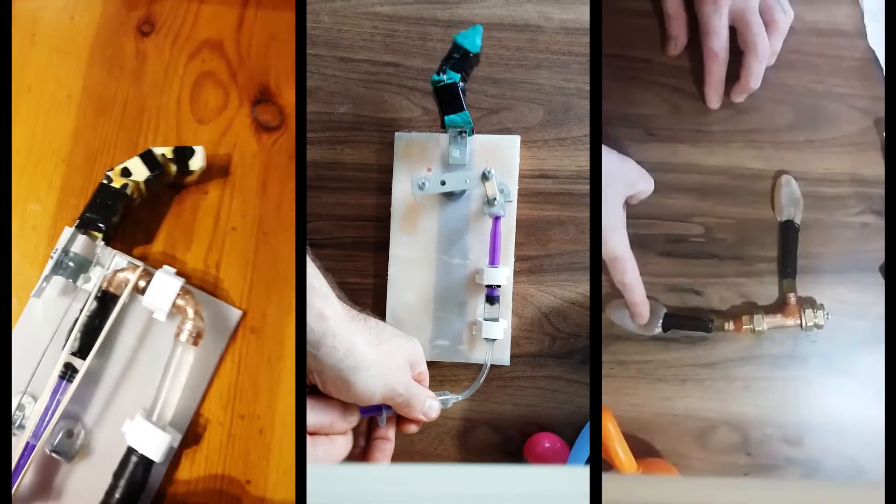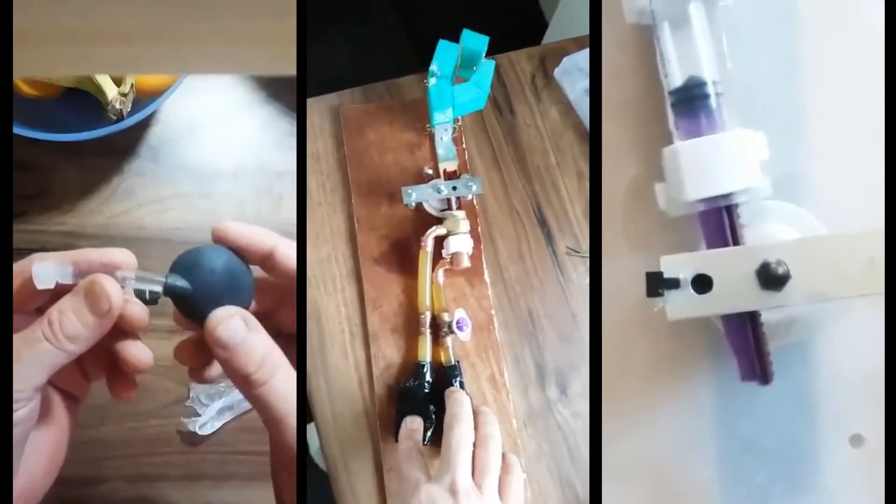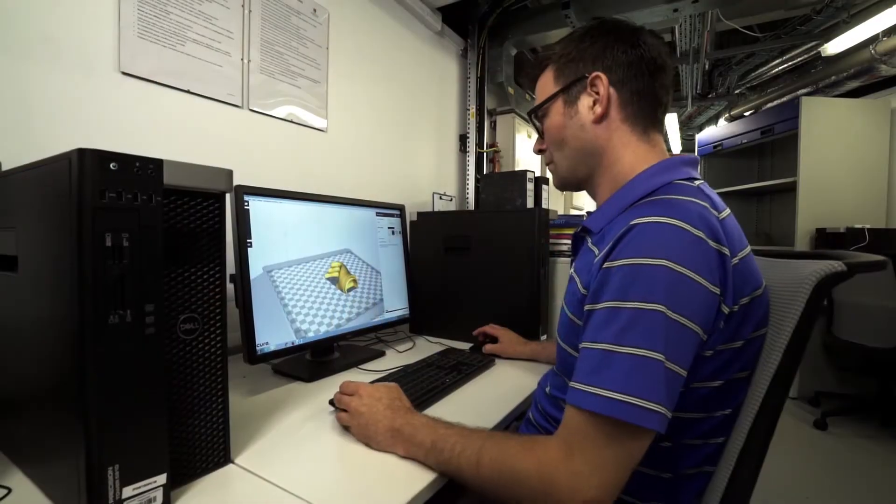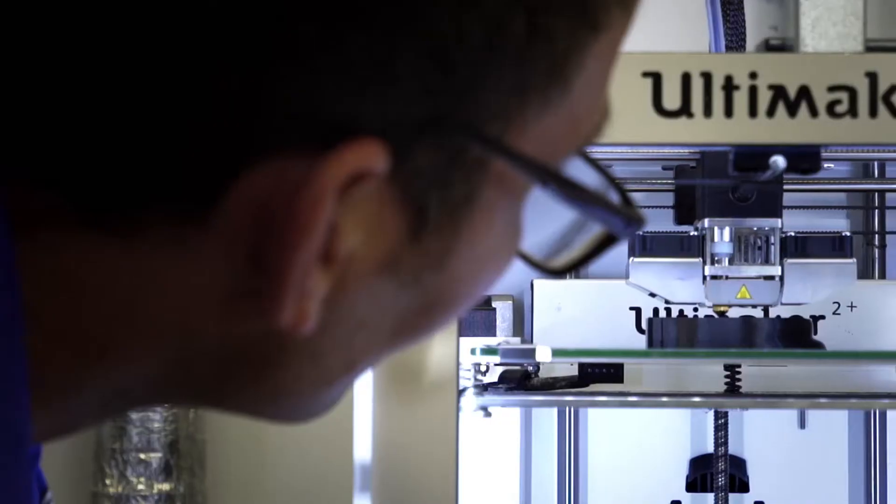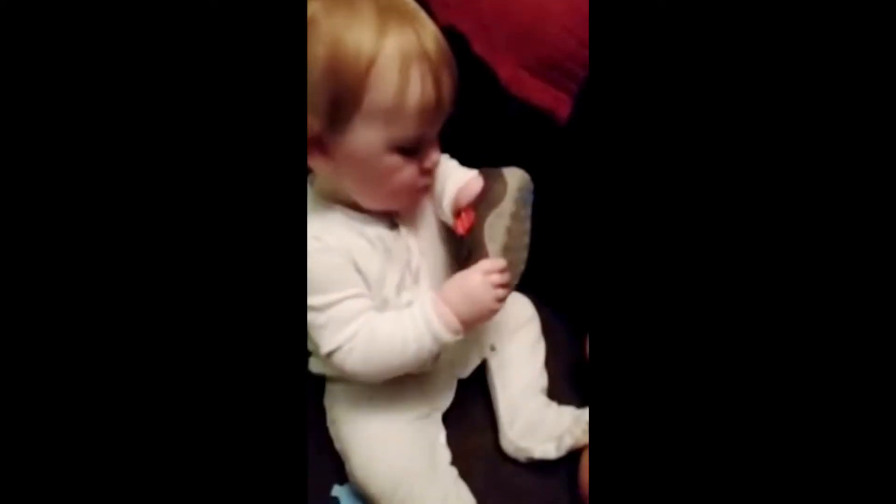I started making prototypes with off-the-shelf components, washers and screwdriver handles, gluing bits of plastic and tubes together. Then I realized actually the cheapest way of doing all of this is 3D printing. I came to Bangor University to see if I could get some help.